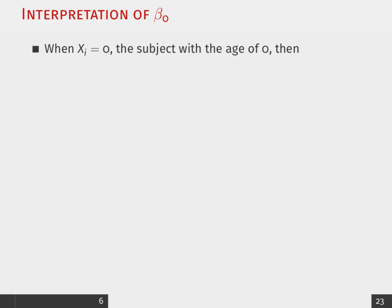then the estimated probability of them having coronary heart disease over the probability of them not having coronary heart disease is equal to that beta intercept, which is negative 5.3.